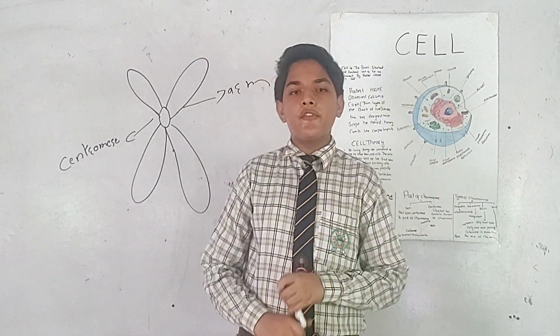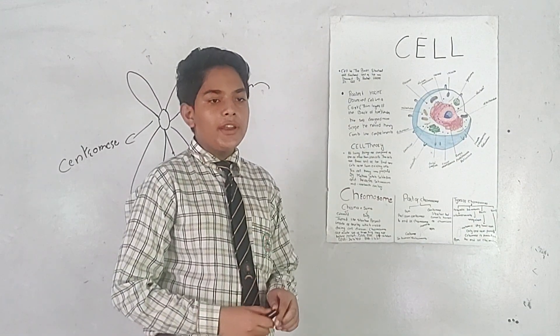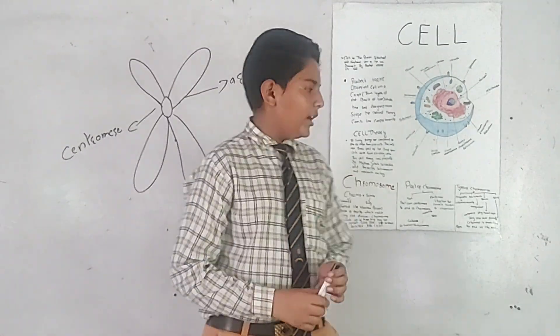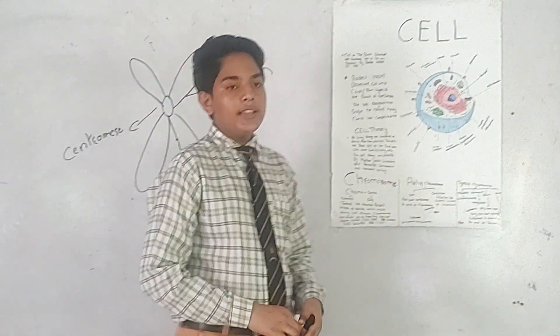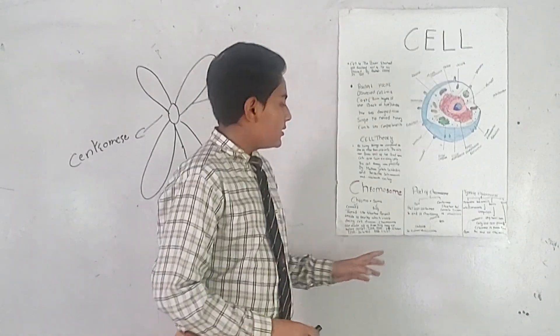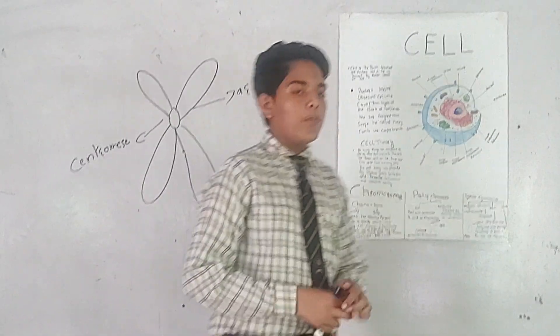Metacentric is a type of chromosome in which centromere is present on the center of chromosome and have two equal arms. Submetacentric is a type of chromosome in which unequal arms are produced and centromere is at the terminal point.